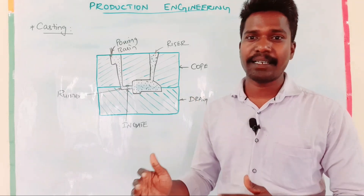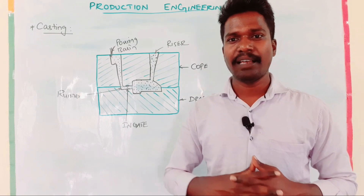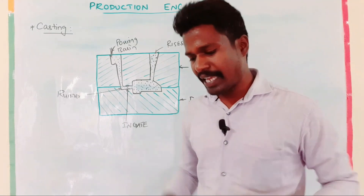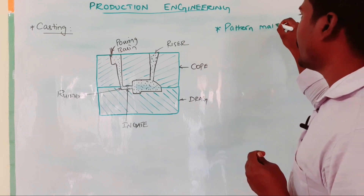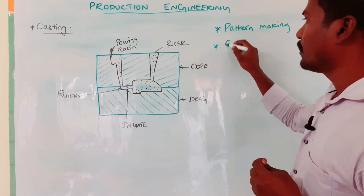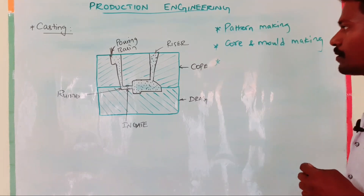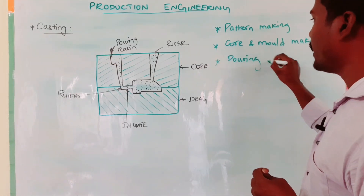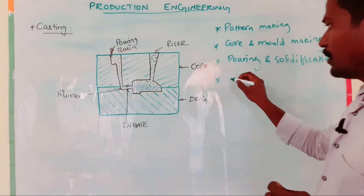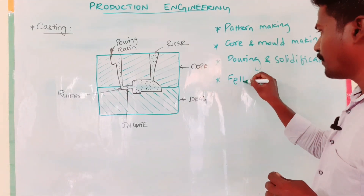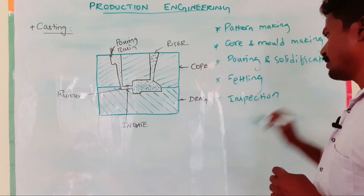What are the various casting methods and what are the various steps involved in the casting process? The casting process steps are: first, pattern making; second, core and mold making; third, pouring and solidification; fourth, fettling; and fifth, inspection.